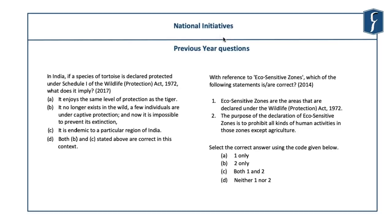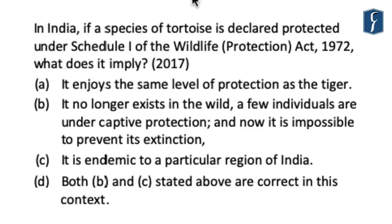We have categorized those questions under the national initiatives section which deal with the mechanisms, laws, and various kinds of instruments created inside India to protect environment, biodiversity, flora, and fauna. We have taken a set of four questions to demonstrate the diversity of questions asked. The first one was asked in 2017, which asks: in India, if a species of tortoise is declared protected under Schedule 1 of the Wildlife Protection Act 1972, what does it imply?